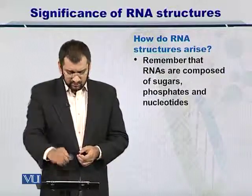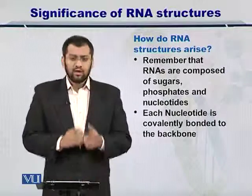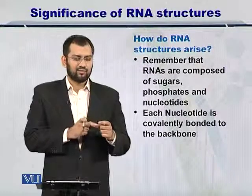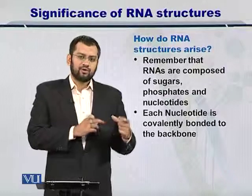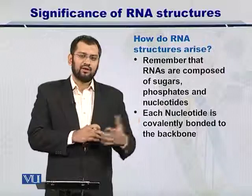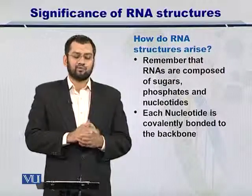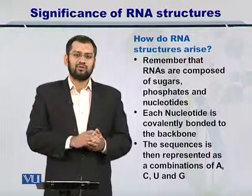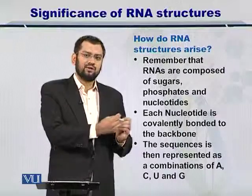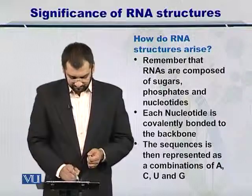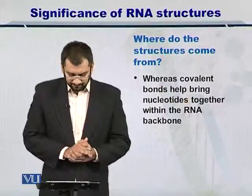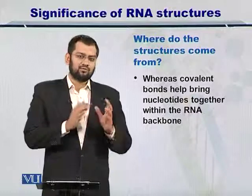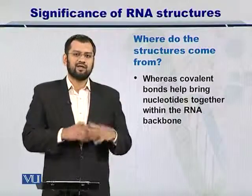So where do the structures come from? Each of the nucleotides is covalently bonded to the ribose sugar — remember, it is ribose for RNA. Since all nucleotides are covalently bonded, the 3D structure comes from the hydrogen bonds that can be formed between the nucleotides covalently attached to the sugar backbone of the RNA.